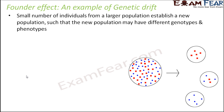Let us try to understand the founder effect using this simple diagram. This picture on the left represents the original population. Inside this original population you might have smaller groups — different types of genes, different people with different genotypes and phenotypes would have formed this original population.